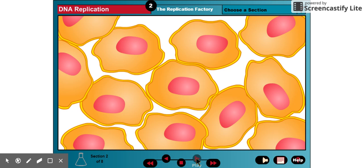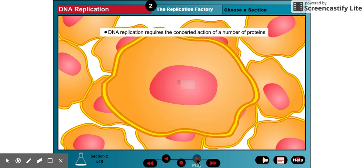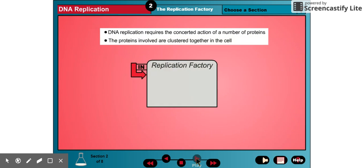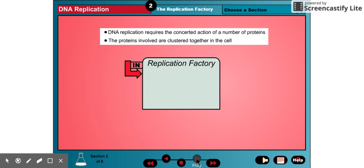DNA replication is an intricate process requiring the concerted action of many different proteins. The replication proteins are clustered together in particular locations in the cell and may therefore be regarded as a small replication factory that manufactures DNA copies.